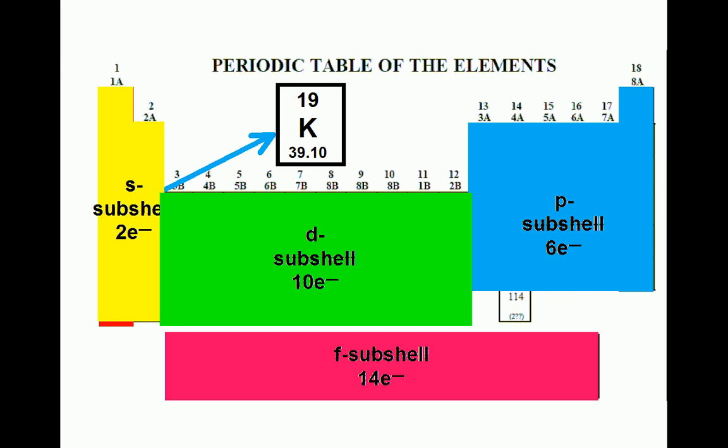This means that a neutral potassium atom has 19 protons and 19 electrons. Therefore, when we write the electron configuration for potassium, there must be 19 electrons, because electrons are represented as the numeric superscripts written on the subshell letters.